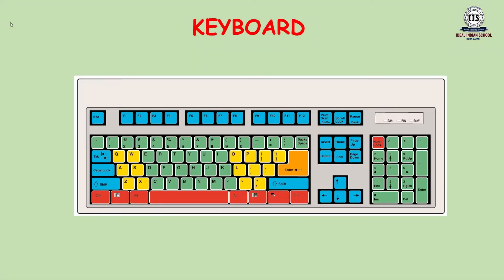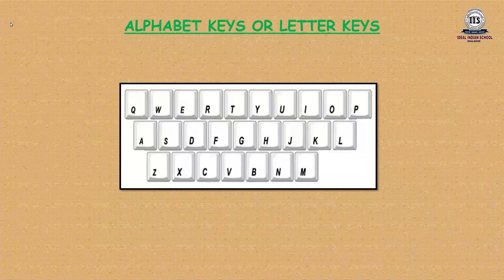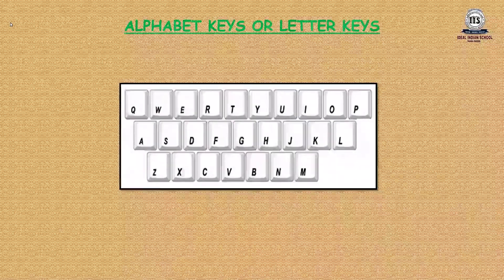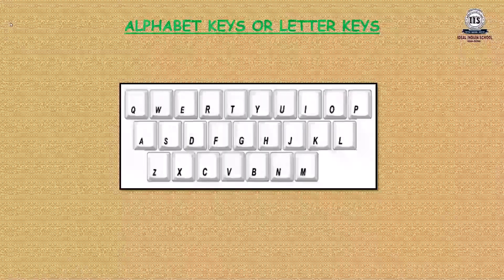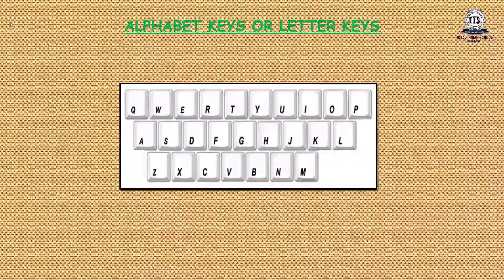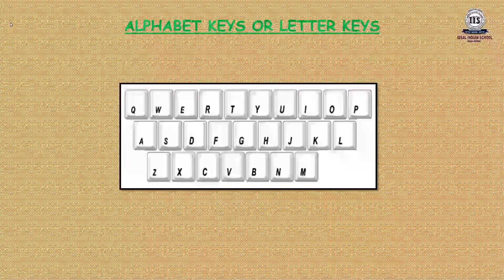You have already learnt about keyboard in your previous class. Keyboard is an input device. It has many buttons which are called keys. These keys are pressed to type words and numbers into the computer. These keys are also used to give instructions to the computer. Keyboard contains many keys which are used to type. Now let us learn about different keys and its functions, beginning with alphabet keys, also called letter keys. There are 26 alphabet keys marked with A to Z. These keys help to type words and sentences.